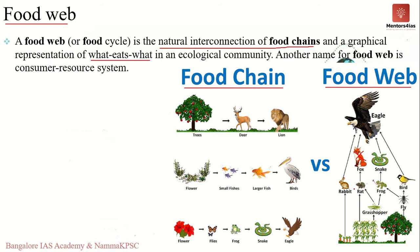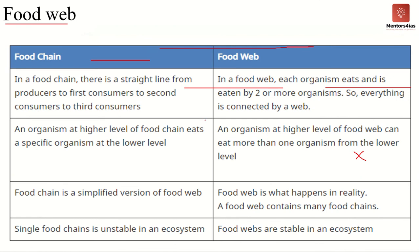Studying food webs is important because it represents all possible paths of energy flow within an ecosystem. Food webs also help us understand how species interact with each other directly or indirectly. Additionally, food webs can be used to study bottom-up or top-down control of community structure within an ecosystem.